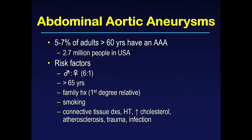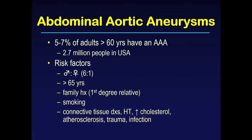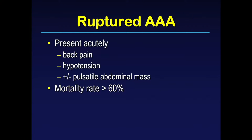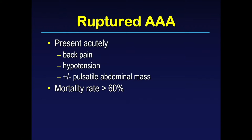Risk factors: abdominal aortic aneurysms are six times more common in men than in women, more common in older patients, and risk increases with a first-degree relative with AAA, smoking, connective tissue disease, hypertension, elevated cholesterol, atherosclerosis, or history of trauma or infection. Most are asymptomatic. If a patient presents with rupture, they present acutely and catastrophically with back pain and hypotension, and may or may not have a pulsatile abdominal mass. Mortality rate is greater than 60%.